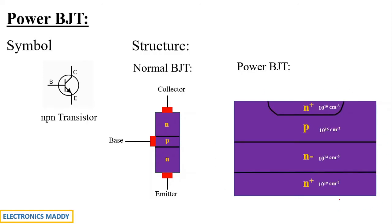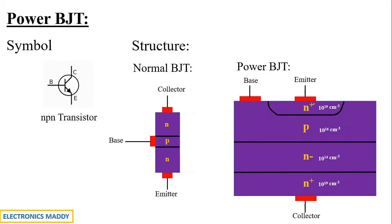The second observation concerns the various layers. In a power BJT you have N+, P, N−, and then N+ layers, along with three terminals: base, emitter, and collector. When you look at this structure, many students get confused, but it is very simple. The first observation is the cross-sectional area. The second thing to notice is the use of plus and minus notation: plus indicates heavily doped and minus indicates lightly doped.